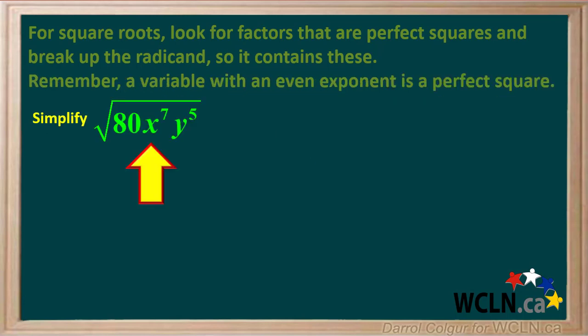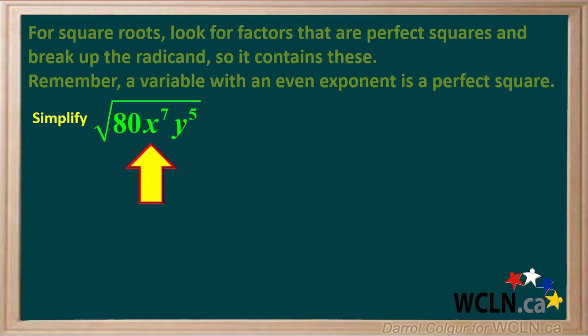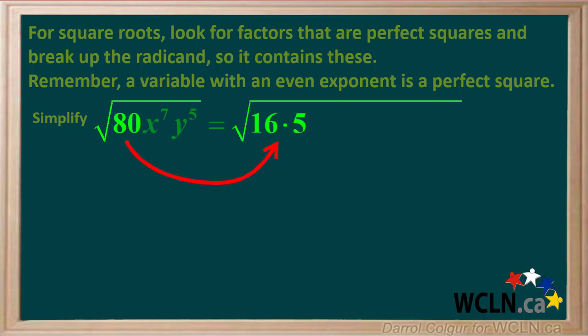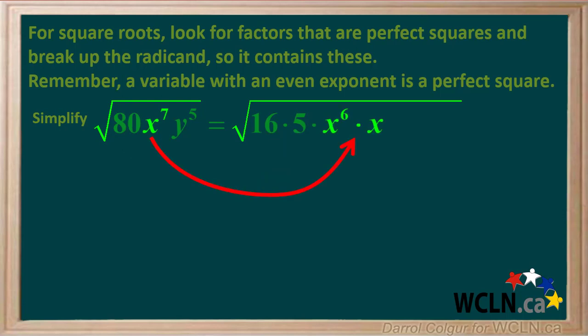Let's do an example. We are asked to simplify the square root of 80x to the 7th y to the 5th. 80 can be factored to 16 times 5, and 16 is a perfect square. x to the 7th can be factored to x to the 6th times x, and x to the 6th is a perfect square.